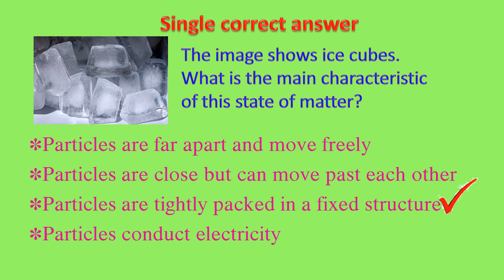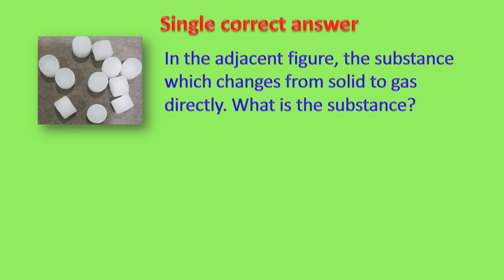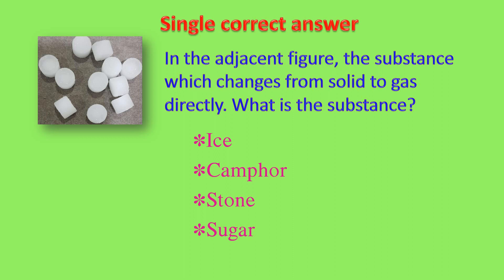Next question. Observe the adjacent figure. The substance which changes from solid to gas directly — what is this substance? Observe the image carefully. That is camphor. Camphor is a solid and it changes from solid to gas directly. This phenomenon is known as sublimation.